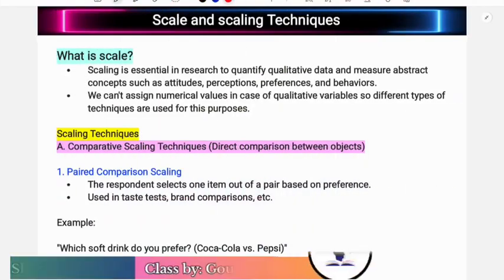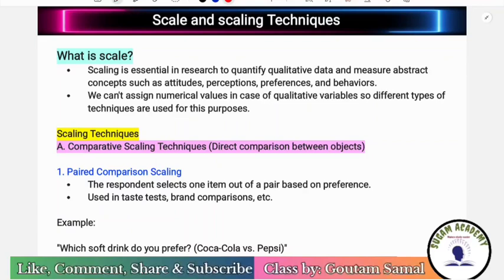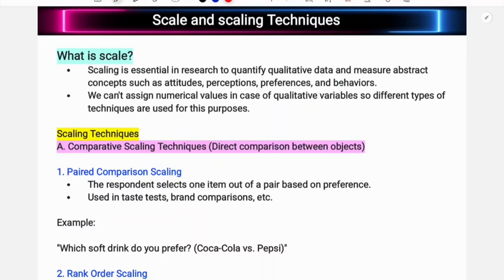Hello everyone, in this class we are going to discuss about scale and scaling techniques from research methodology. The scale is essential in research to quantify qualitative data and measure abstract concepts such as attributes, attitudes, perception, preference, and behaviors. Scaling techniques are used to quantify qualitative data — variables involving behavior, preference, and choice.